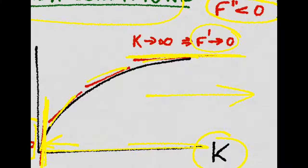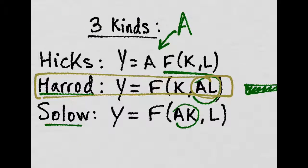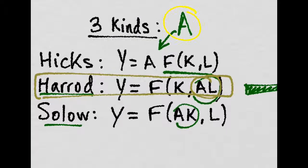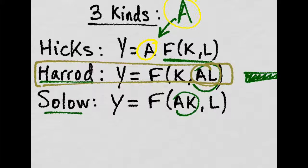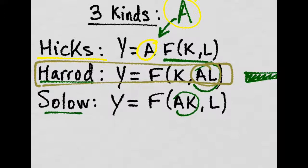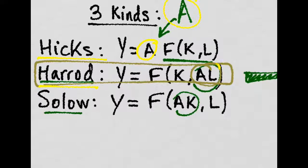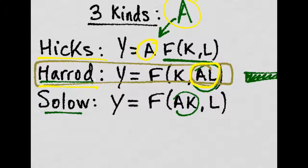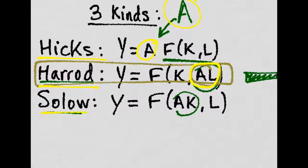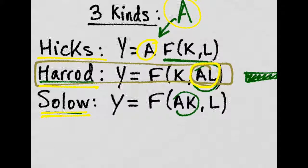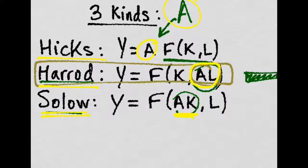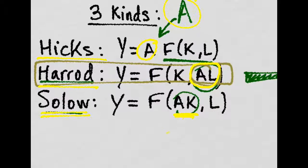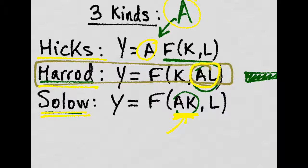We have three kinds of technology, which we call A. We could introduce it on the outside of the production function, just the Hicks form, or we could use Harrod, which is using effective labor by multiplying by labor, or the Solow form, which is capital-augmenting technology. But we're going to use the Harrod, that is, the labor-augmenting technological progress.